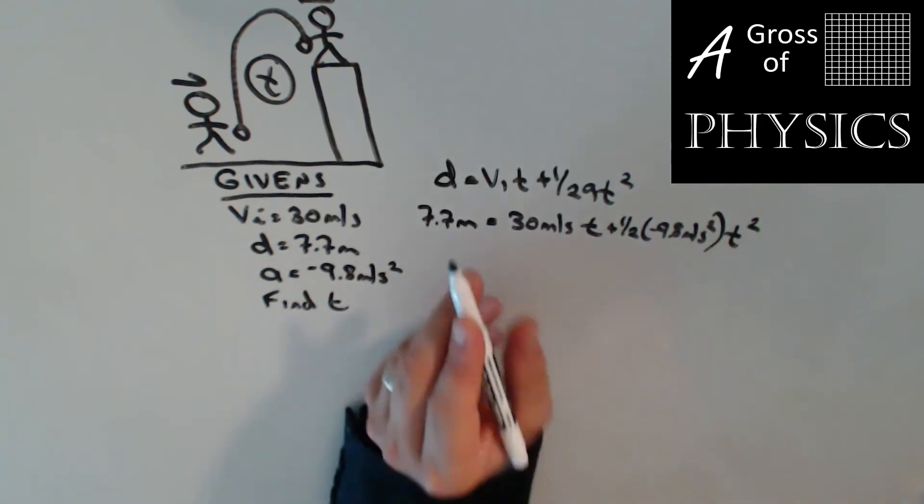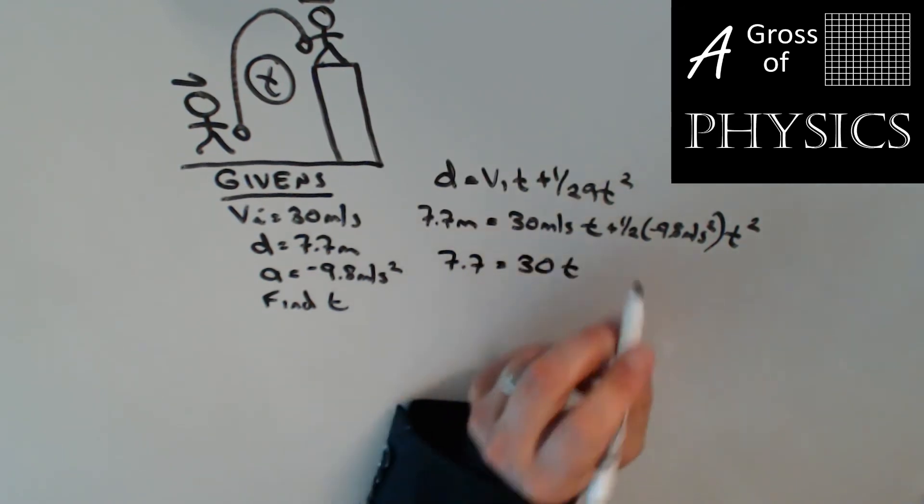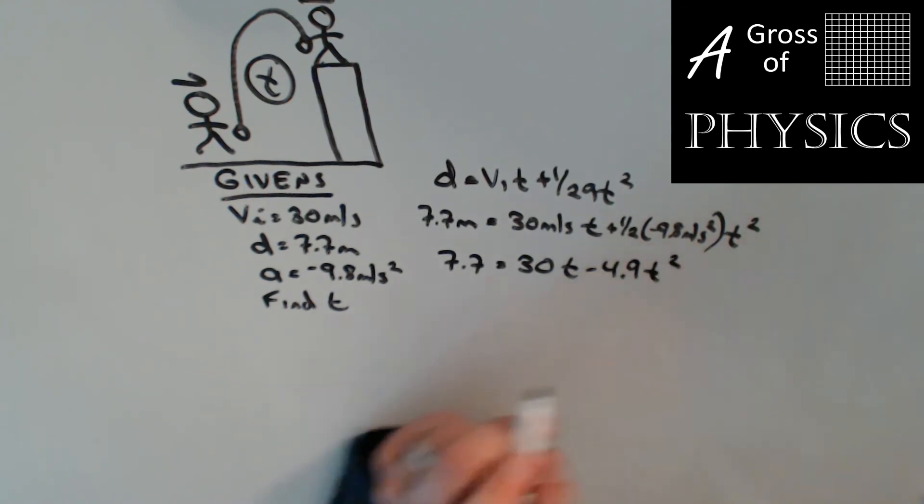7.7 meters equals 30 meters per second times t plus one half times negative 9.8 meters per second squared times t squared. Now let's simplify this a little bit: 7.7 equals 30t minus 4.9t squared.